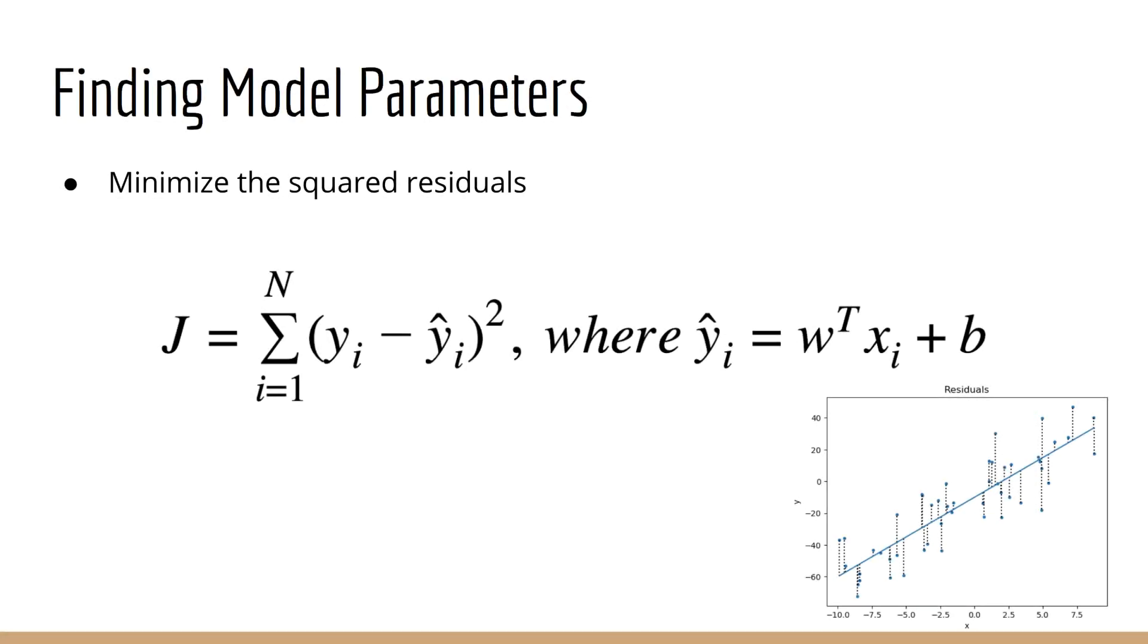In case you don't remember the basic steps when you're finding the parameters of a model are like this. First we define a loss function which in this case is the squared error. That's the sum over all n data points of y sub i minus y hat sub i all squared. Y hat sub i is our prediction and it's equal to w transpose x sub i plus b. And here w is our weight vector and b is our bias term. Then the second step is to minimize the squared error with respect to our parameters w and b.